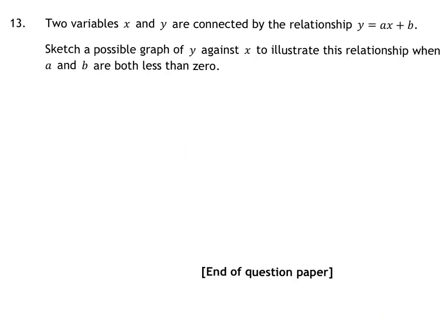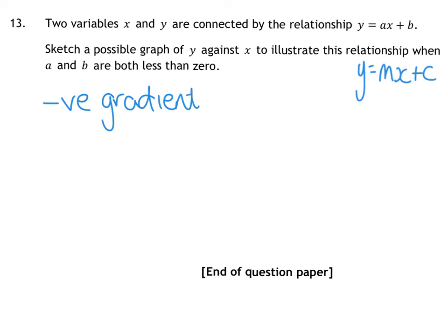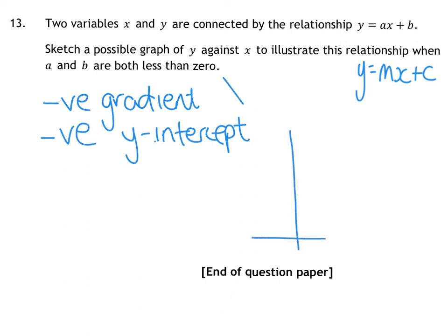Question 13 is a straight-line question. It says two variables, x and y, are connected by the relationship y equals ax plus b. To me that looks like y equals mx plus c — the equation of a straight line. It tells us to sketch a possible graph where a and b are both less than 0. So a is in place of the gradient, meaning we want a negative gradient. And b is less than 0, meaning it will also have a negative y-intercept.